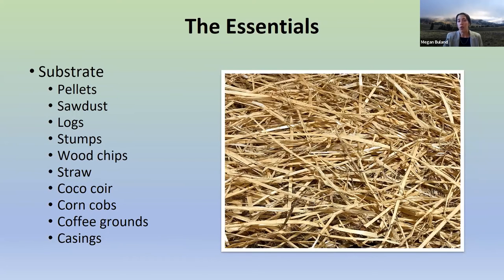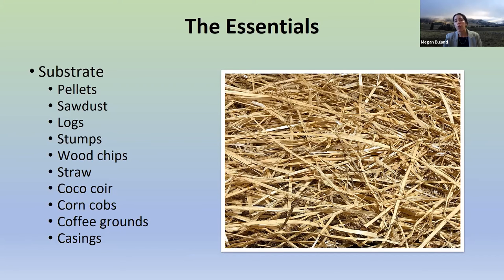Straw is also a great choice, and it's actually what I use most often in my home cultivation — just plain old straw, not hay, because hay has too many nutrients. Straw is easy to pasteurize or sterilize, which we'll talk about in a moment. It's a really nice food source, especially for oyster mushrooms, and it's a great starting material when you begin growing mushrooms at home.